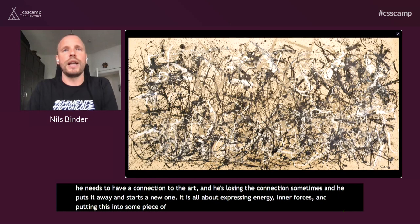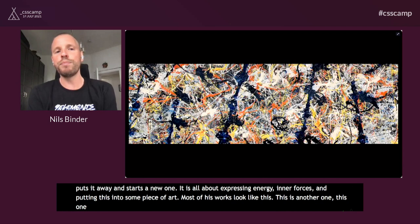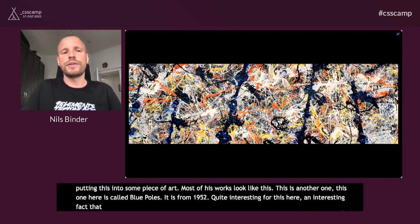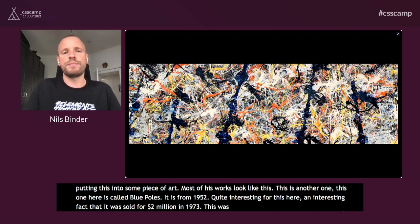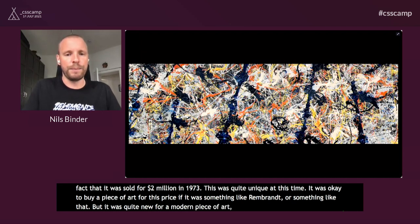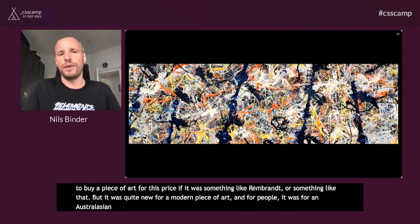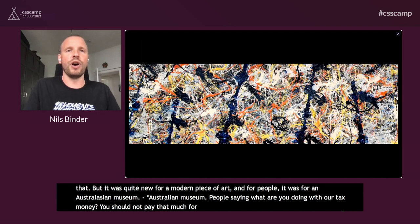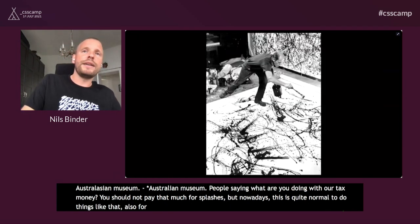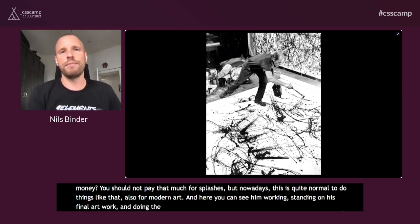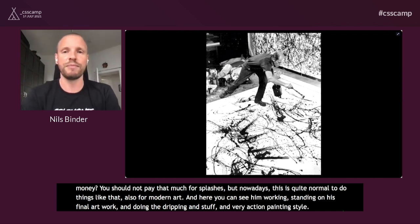Most of his works look like this. Another one is called Blue Poles, from 1952. An interesting fact: it was sold for $2 million in 1973, which was quite unique at the time — it was okay for something like a Rembrandt, but quite new for modern art. People were saying this is what we're doing with our tax money — you shouldn't pay that much for just splashes. But nowadays this is quite normal for modern art too. You can see him standing on his final artwork doing all the dripping — very action painting style. He's sometimes called Jack the Dripper.